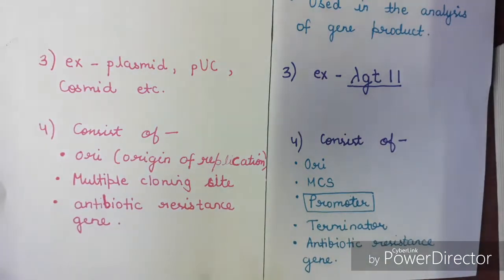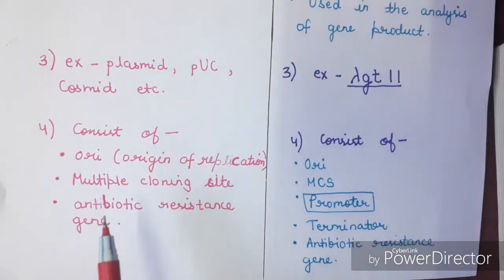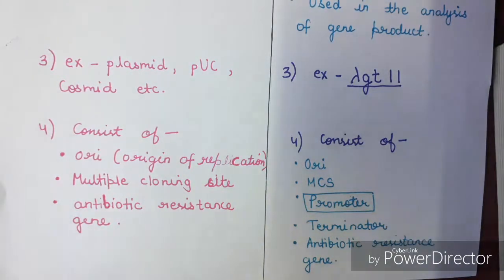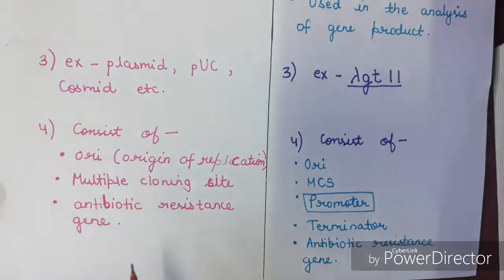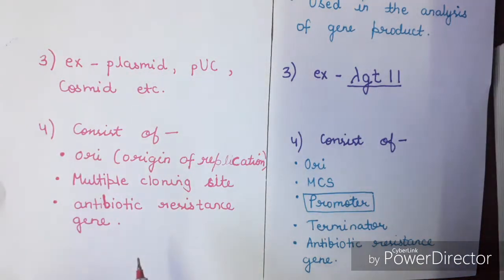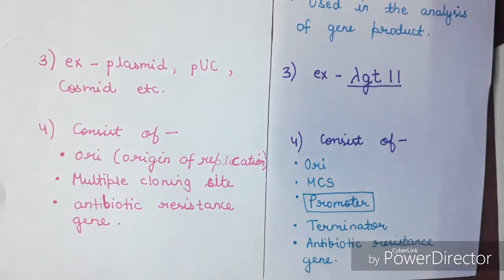The main difference between the cloning vector and the expression vector is that the cloning vector is used for producing multiple copies, while the expression vector is used for the production of a desired protein. In the cloning vector, we don't have a promoter and a terminator, whereas in the expression vector we have both a promoter and a terminator. Thank you so much.